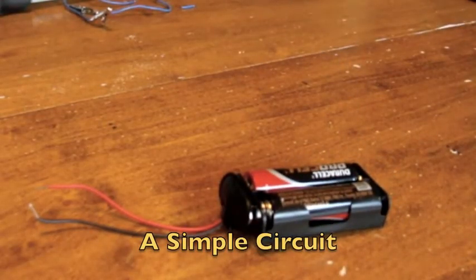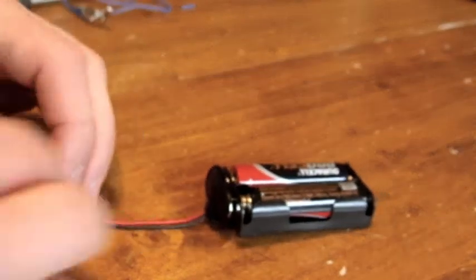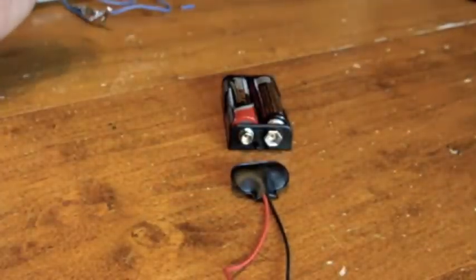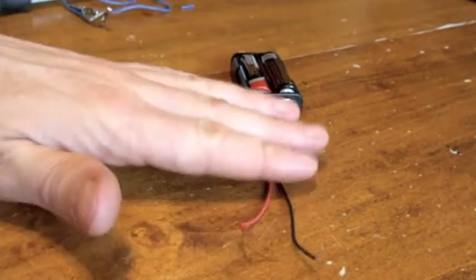Alright, we're ready to make our first simple circuit. I'm using a battery holder that has some wires already coming out of it, so that makes it easier. You can even disconnect these wires from the battery so that you can be safe when you're working.